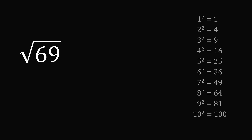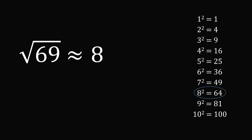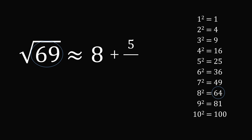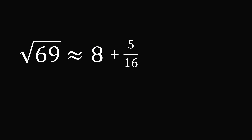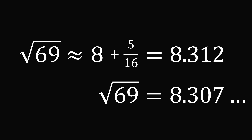Let's do another example: the square root of 69. We start with our table of squares — which square is closest to 69? This will be 8 squared, which equals 64. So the square root of 69 is approximately equal to 8. We add an adjustment: the numerator is 69 minus 64, which equals 5. For the denominator, we take 8 and multiply by 2 to get 16. So the square root of 69 is approximately 8 plus 5 over 16, which equals 8.312. The actual value is 8.307, so again we have a very accurate approximation.